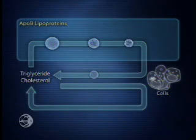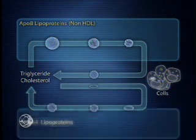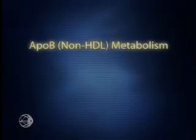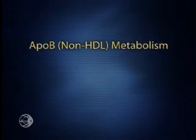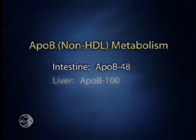ApoB-containing lipoproteins, also called non-HDL, comprise the lipid delivery pathway, while ApoA1-containing lipoproteins, or HDL, participate in reverse cholesterol transport. ApoB-containing lipoproteins originate from two sources: an intestinal ApoB48 lineage and a hepatic ApoB100 lineage.